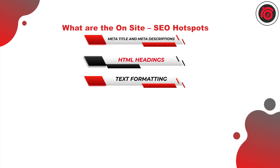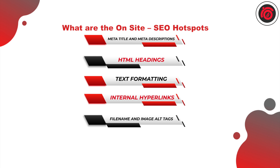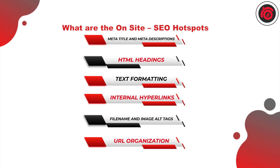Then we have file names and image alt tags. As the name suggests, make sure you add all proper image attributes — the image alt tags, proper caption names, and image file names — so that Google bots can properly understand what type of images are being used and what they depict.